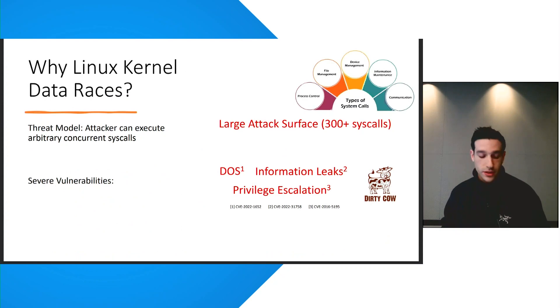Now, there are two reasons that we should care about preventing data races in the Linux kernel. So first, if we consider a threat model where an attacker has some limited access to execute programs, there is a large attack surface of over 300 different system calls that can be executed together concurrently to potentially trigger data race vulnerabilities.